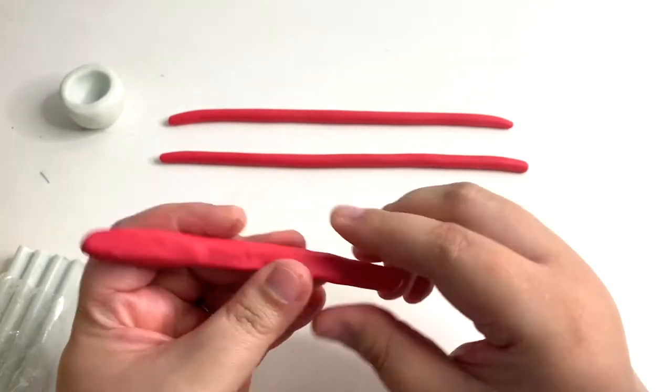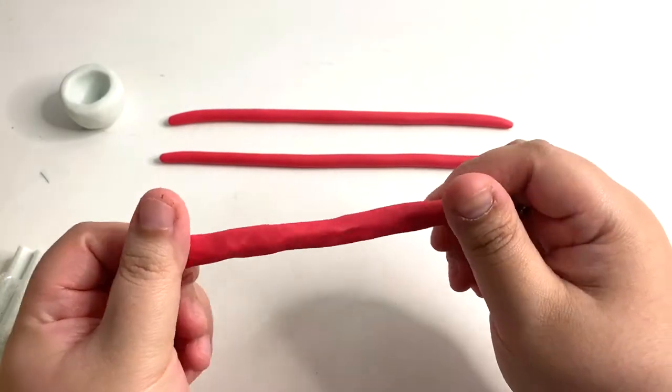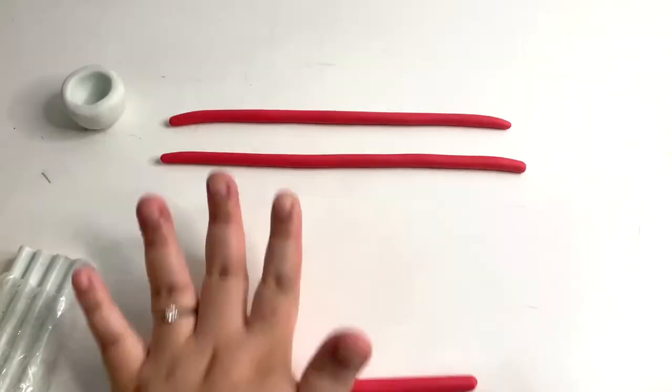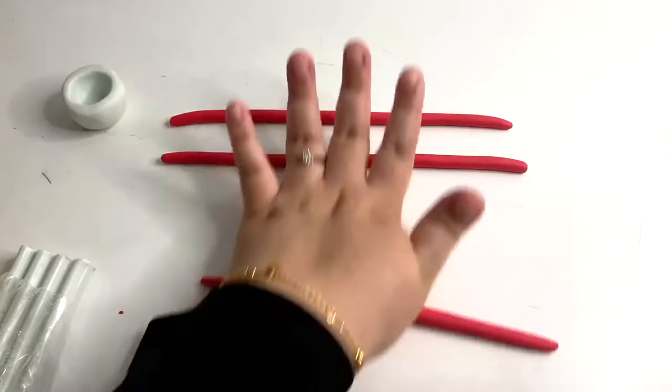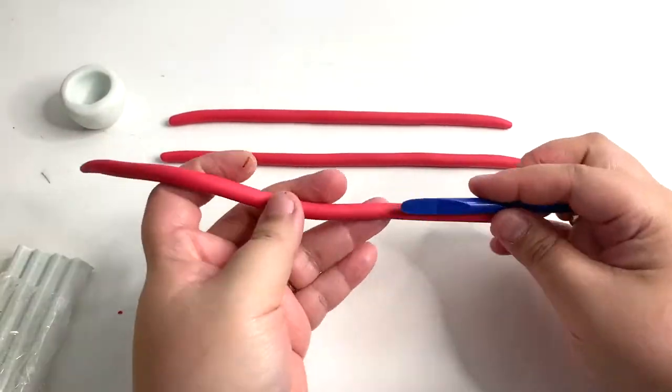Now, tap the flat spot down so it's more rounded and not so flat. Then, you can start rolling again with your palm. Roll it from one end to the other. You can prepare about 3 to 4 coils.